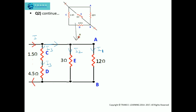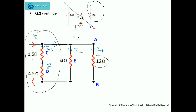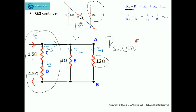Redrawing the circuit: we have the 12 ohm equivalent from RS1, the 3 ohm resistor E, and the series combination of C and D. Since the same current I3 flows through C and D, we calculate RS2, the equivalent resistance in series across C and D: RS2 equals resistance C plus resistance D, which is 1.5 plus 4.5, giving 6 ohms.